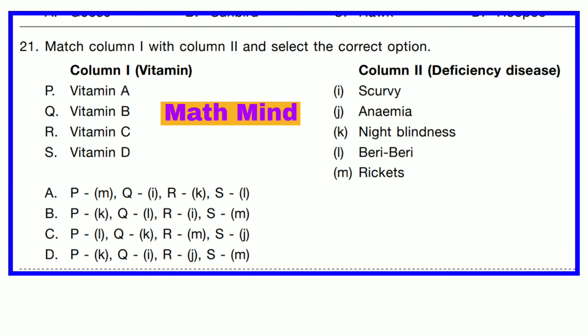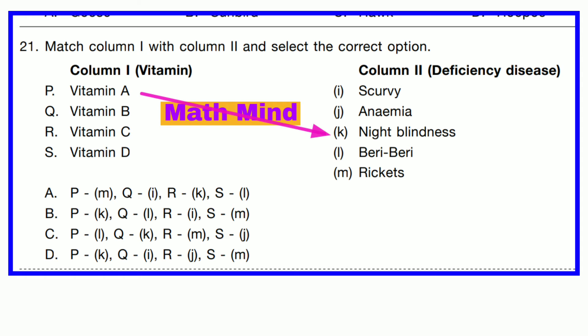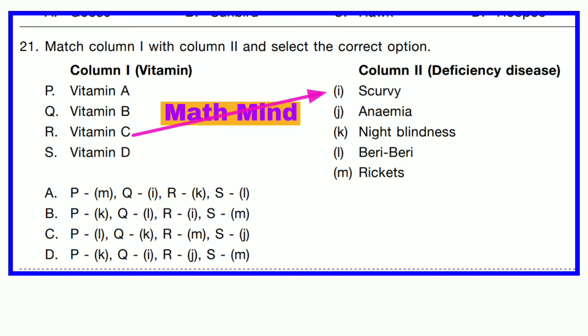Question number 21. Match column 1 with column 2 and select the correct option. Column 1 is vitamin; column 2 is deficiency disease. P: Vitamin A matches with K: Night blindness. Q: Vitamin B matches with L. R: Vitamin C matches with I: Scurvy. S: Vitamin D matches with M: Rickets.